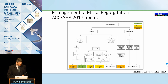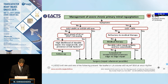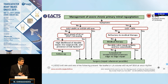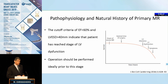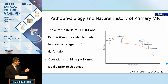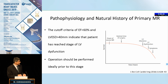Moving on to treatment guidelines for primary MR: both the US and European guidelines agree that a symptomatic patient with primary MR needs to go to surgery, and an asymptomatic patient who has reached a cutoff of LV ejection fraction of 60% or less, or an LV end-systolic dimension of 40 or 45 mm, meets criteria for mitral valve surgery and repair. However, these cutoff criteria indicate the patient has already reached a stage of LV dysfunction that may be irreversible, so it is optimal to treat patients before they reach this point, as patients with these characteristics can get a perfect repair and still end up with impaired left ventricular function.